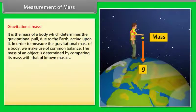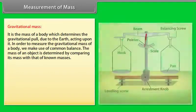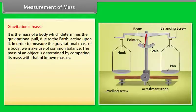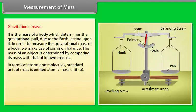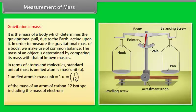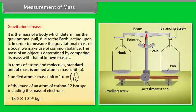Thus, a very heavy body has a larger inertial mass than a light body. In order to measure the inertial mass of a body, we make use of inertial balance. Gravitational mass: it is the mass of a body which determines the gravitational pull due to the earth acting upon it. In order to measure the gravitational mass of a body, we make use of common balance. The mass of an object is determined by comparing its mass with that of known masses. In terms of atoms and molecules, the standard unit of mass is unified atomic mass unit, that is U. One unified atomic mass unit equals 1U equals 1 upon 12 of the mass of an atom of carbon 12 isotope, including the mass of electrons, equals 1.66 into 10 raised to the power minus 27 kg.